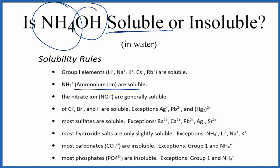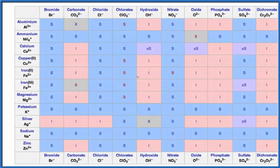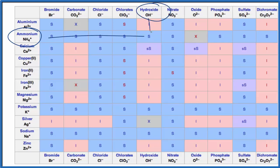We could also look at a solubility table. Here again on our solubility table, we find the ammonium ion, NH4+, and the hydroxide ion, OH-. Go across and down, S, soluble in water. So we pretty definitively can say NH4OH is soluble in water.